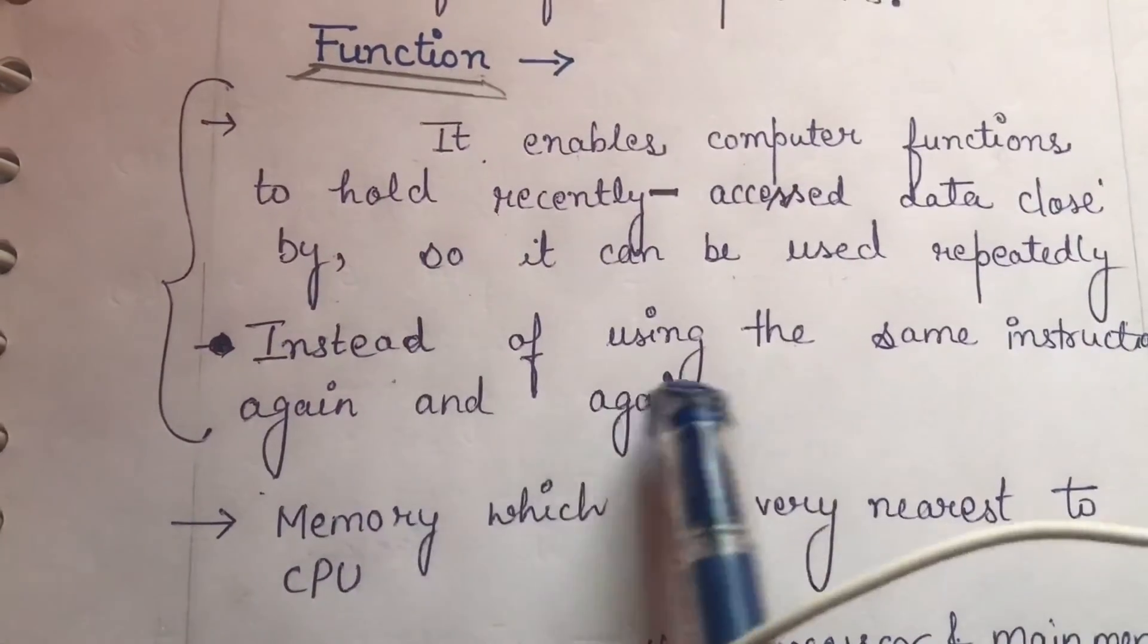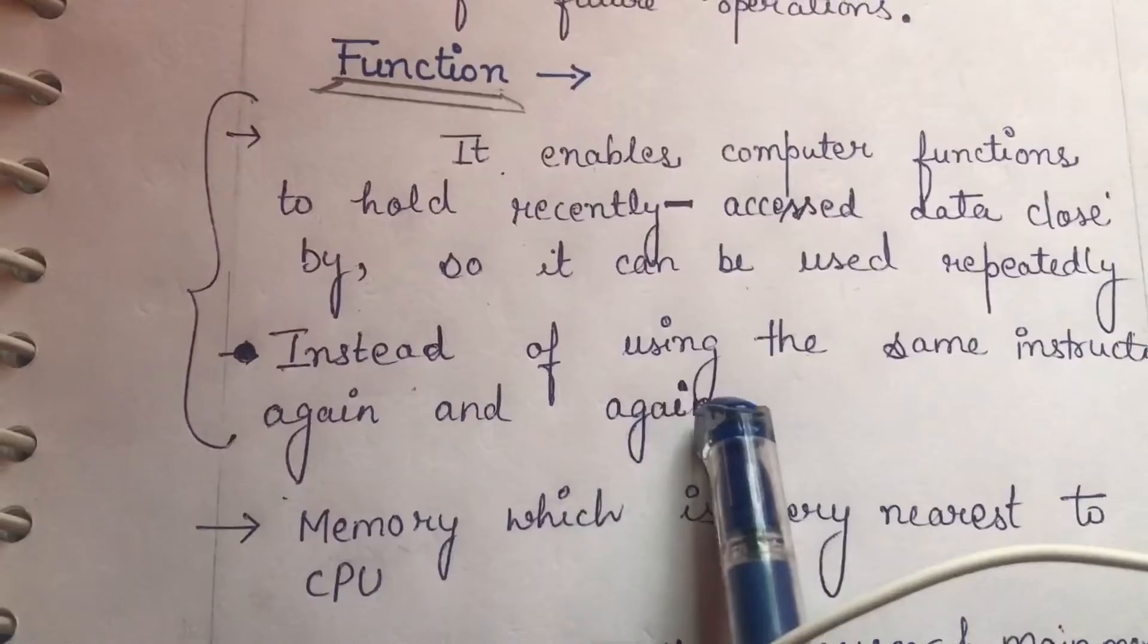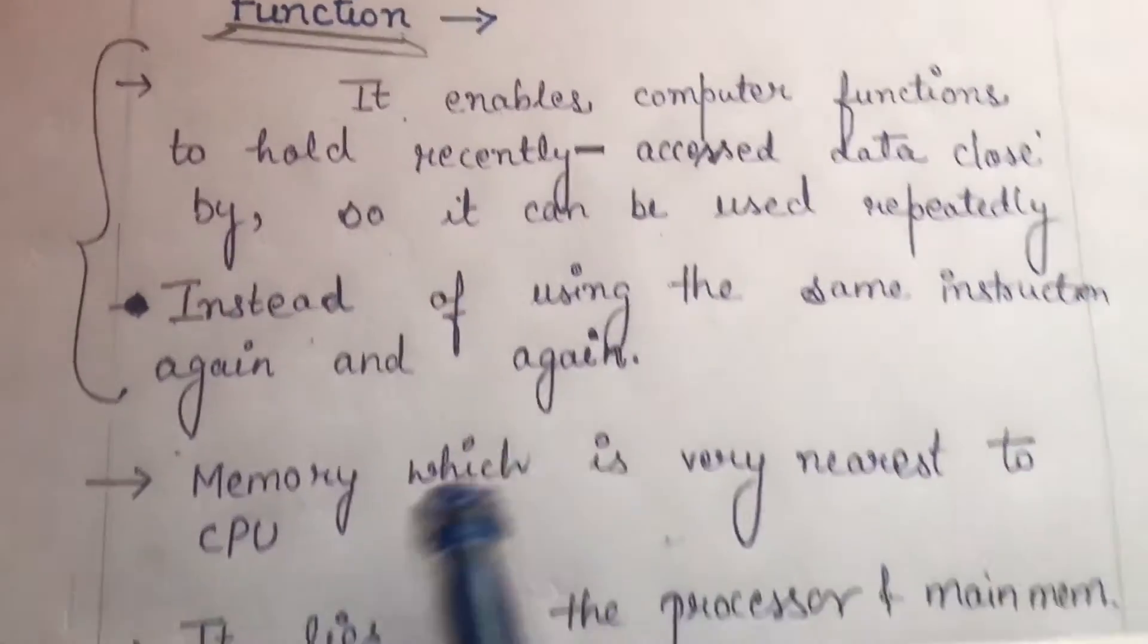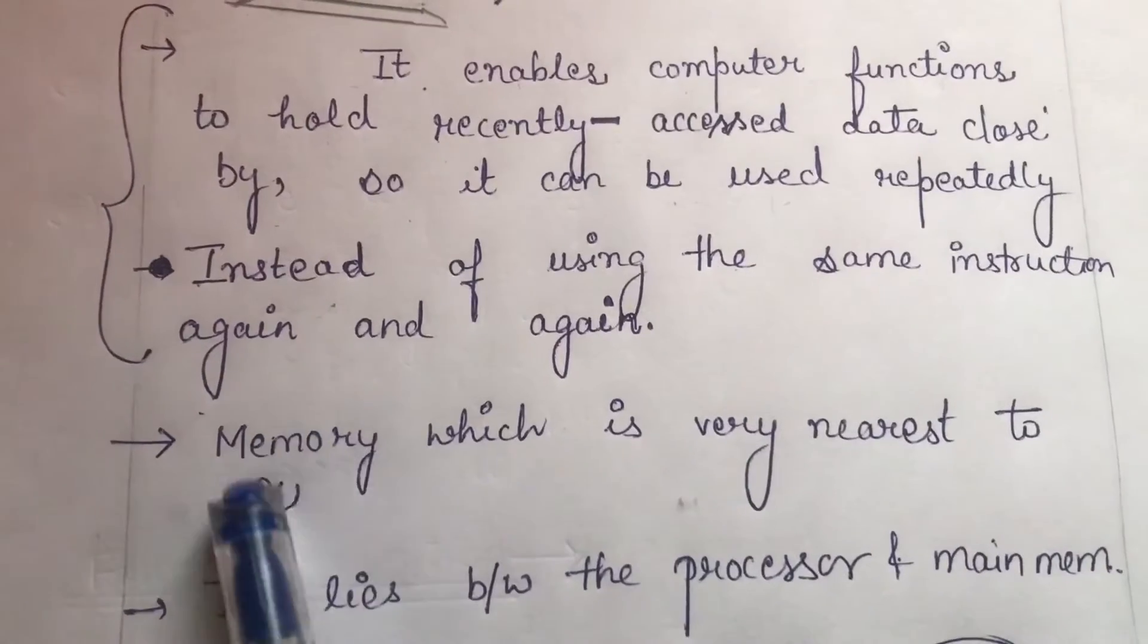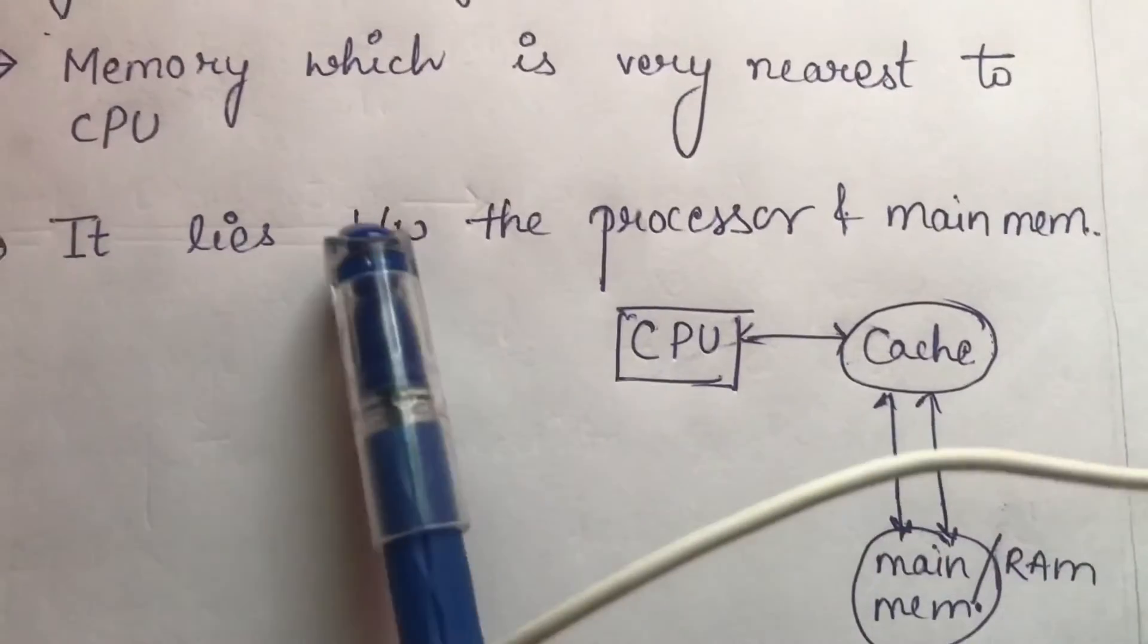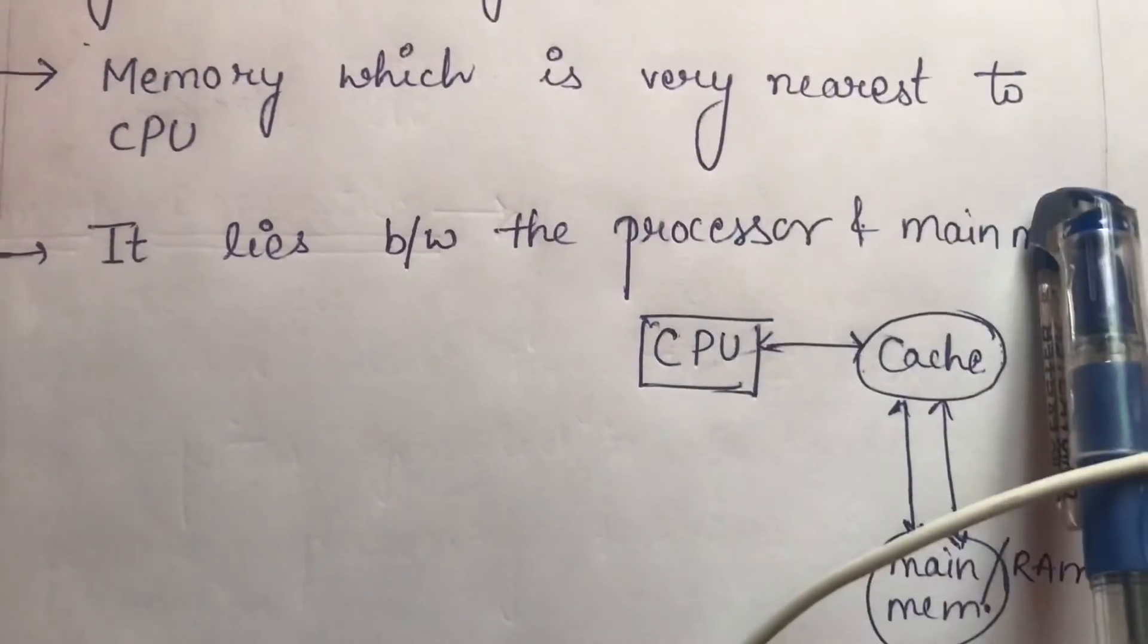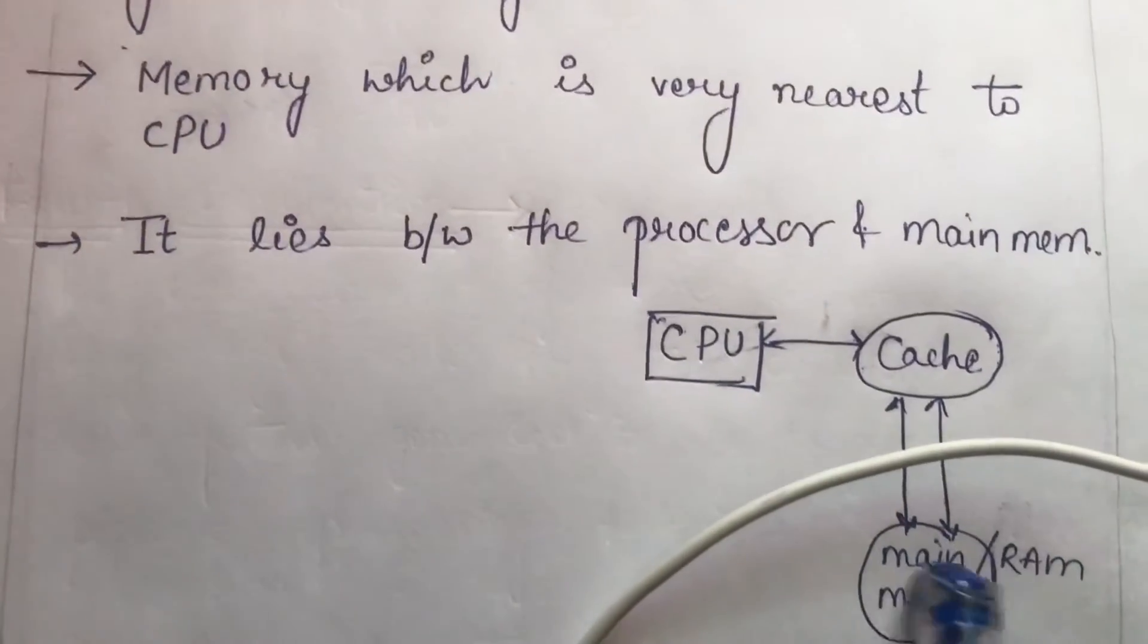So we don't have to give the same instruction for that data again and again repeatedly. This way our energy and time will be saved. The memory which is very nearest to CPU, as I have already told you, it lies between the processor and main memory.